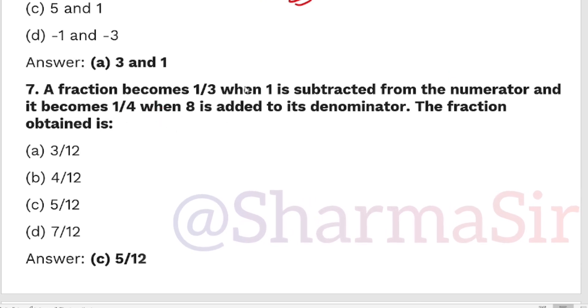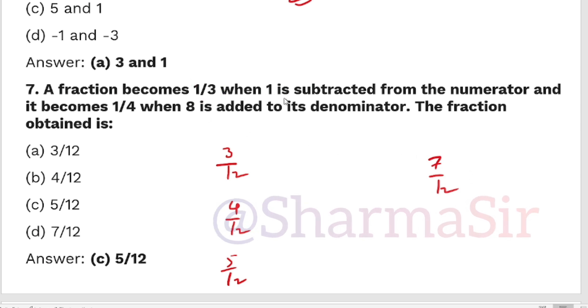A fraction becomes 1/3 when 1 is subtracted from numerator. I have written the fractions 3/12, 4/12, then 5/12, then 7/12. A fraction becomes 1/3 when 1 is subtracted from numerator. Checking: 1/12, 2/12 equals 1/6, 3/12 equals 1/4.